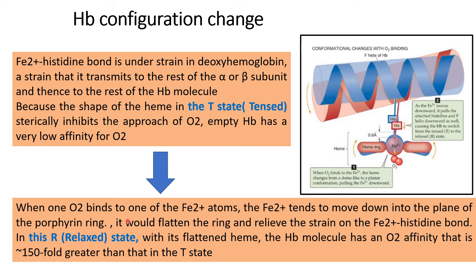As one molecule of oxygen combines, the iron moves downward and becomes flat — this is called the relaxed state. This increases the affinity for the next oxygen molecule. In the relaxed configuration, hemoglobin has an oxygen affinity 150-fold greater than in the tensed configuration. This progressive increase in affinity with each oxygen binding — the change from tensed to relaxed configuration — is the fundamental cause of the sigmoid shape of the oxyhemoglobin dissociation curve.